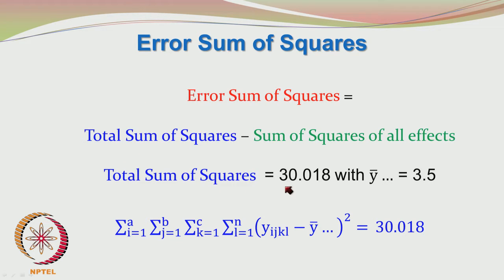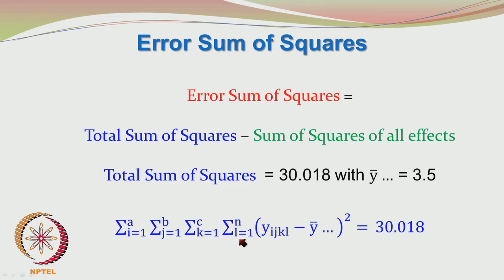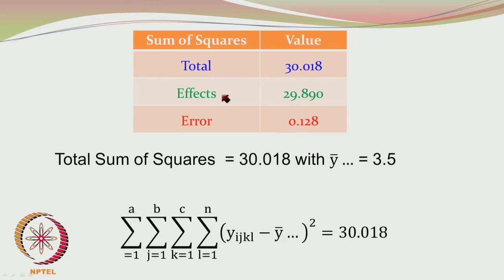The total sum of squares is 30.018 with the grand mean equal to 3.5. The index i runs from 1 to a representing the levels of A, j from 1 to b for the levels of B, and k from 1 to c for the levels of C. Here a = b = c = 2, and n represents the number of repeats indexed by l. The response is denoted yijkl. When we carry out these computations we get 30.018 as the total sum of squares, and the sum of squares due to the effects would be 29.890 from A, B, AB interaction, AC interaction, and BC interaction.